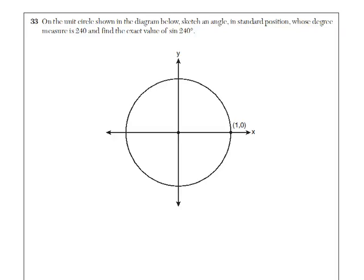Question 33, they're asking, this is called the unit circle. It's a circle that has radius 1 and center located at 0, 0. It says to sketch an angle whose degree measure is 240 degrees.